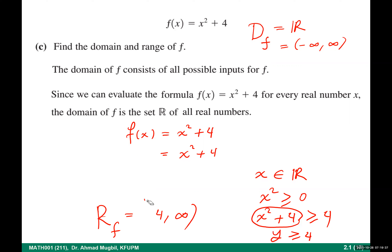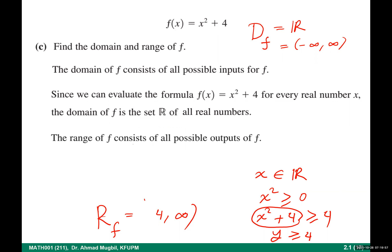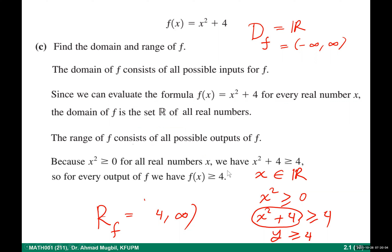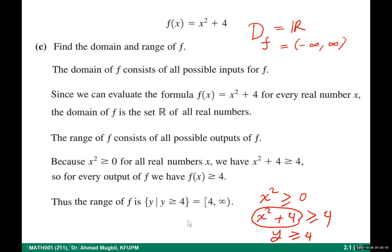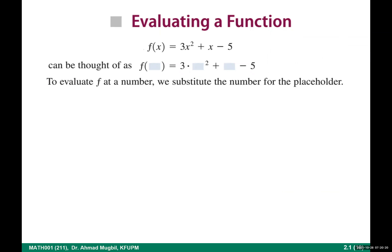One way to find the range is to build the function: start from x, work on x until you get y, then determine the range. The range is all possible outputs — y such that y ≥ 4 for this function.